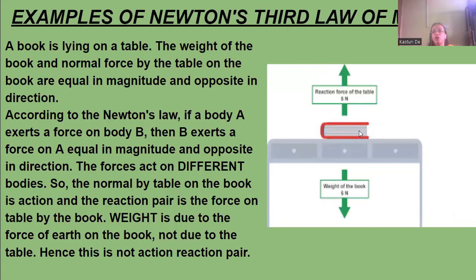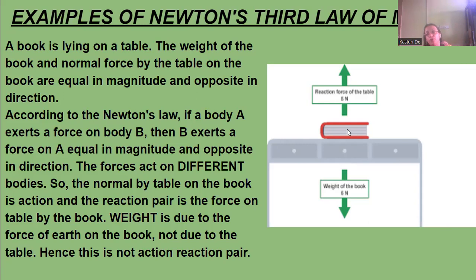Another example of Newton's third law: a book lying on a table. Why is it not sliding down? The weight of the book acts downward, and an equal and opposite normal force is applied by the table on the book. The weight acts downward and the table exerts the same and equal force in the opposite direction on the book — that is the reaction force. That is how the book lies on the table.